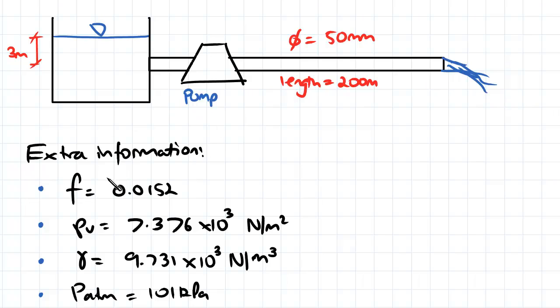In terms of extra information we have, we've got a friction factor of 0.0152. At 40 degrees, our vapor pressure is 7.376 times 10 cubed newtons per meter squared. Our unit weight is 9.731 times 10 cubed newtons per meter cubed. And the atmospheric pressure is 101 kPa.